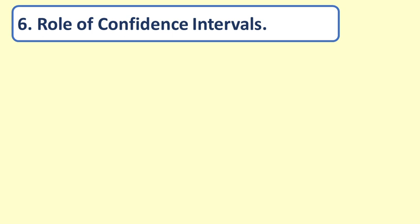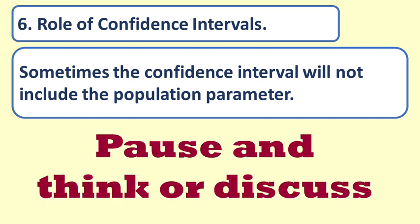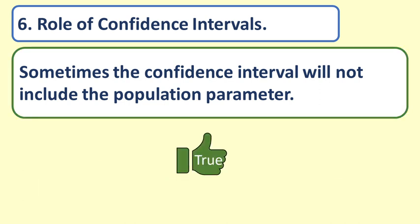Question 6: Role of confidence intervals. Sometimes the confidence interval will not include the population parameter. Answer: True. Mostly an appropriate confidence interval will contain the population parameter, but sometimes a confidence interval will not contain the population parameter, and we do not know whether our confidence interval does or does not contain the population parameter.